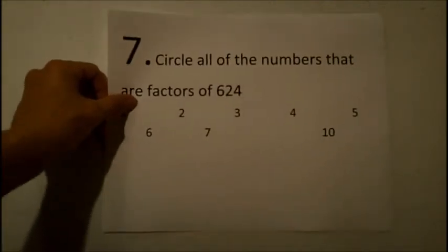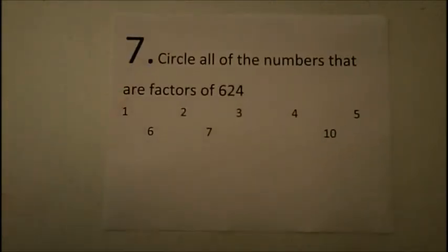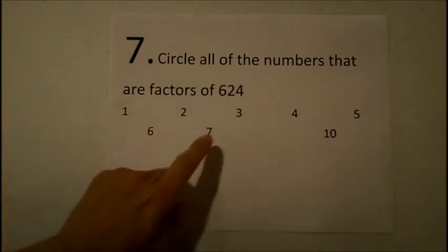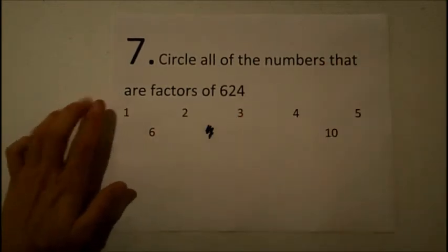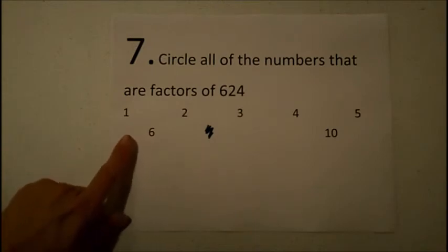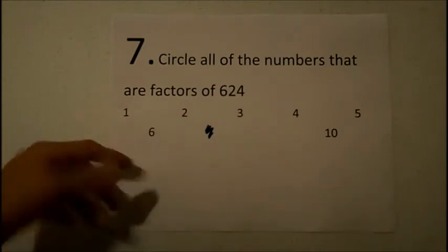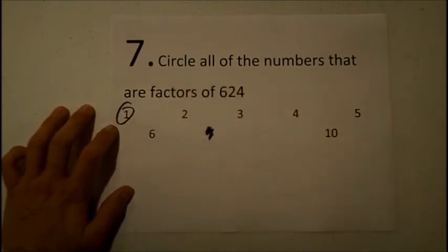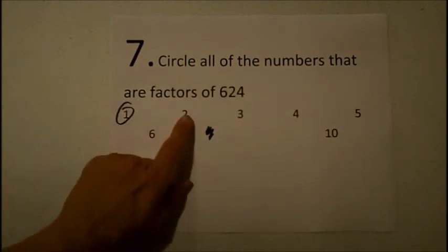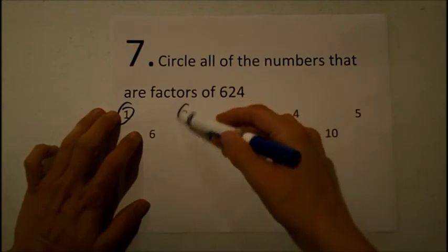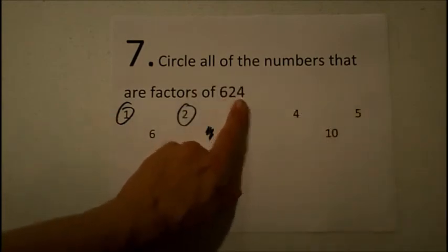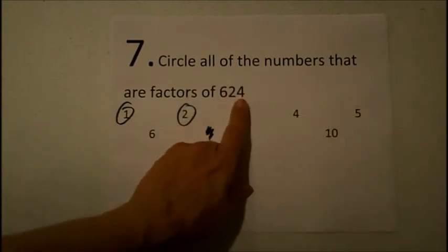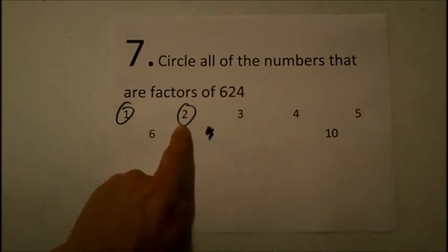Number 7 says to circle all of the numbers that are factors of 624. For this, you would use your divisibility rules to figure out each one. 1 is a factor of every single number, so we would definitely circle that. We're going to go ahead and circle 2 because 624 is even. The 2 rule says that if the number is even, that number is divisible by 2.